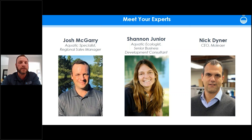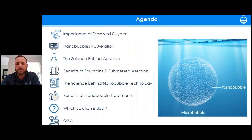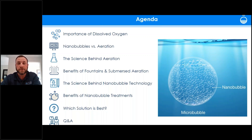We'll hear from Shannon and Nick later on. First, let's talk about some agenda items. The importance of dissolved oxygen — did you know that fish require at least four milligrams per liter, or parts per million, of dissolved oxygen to survive?